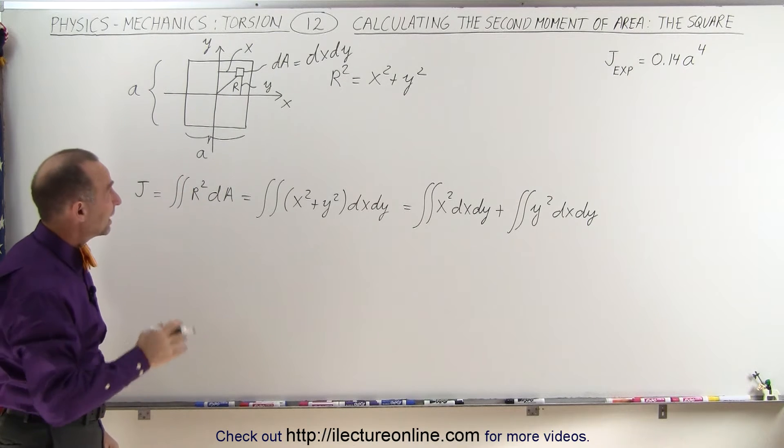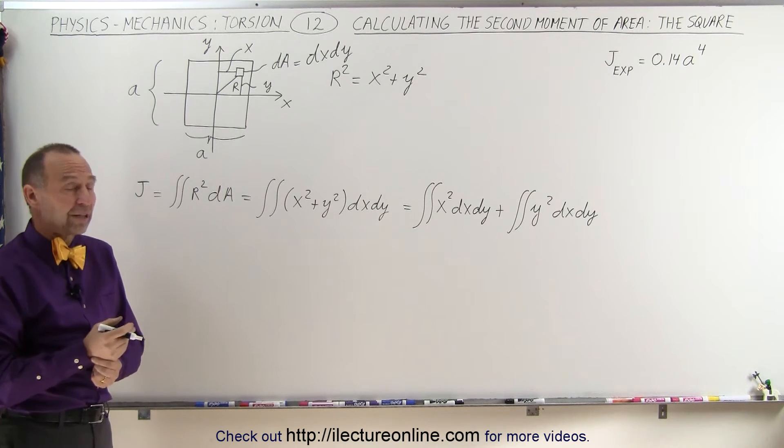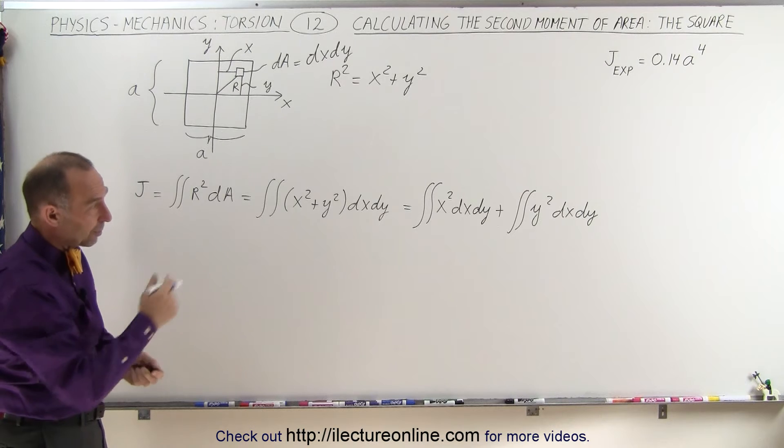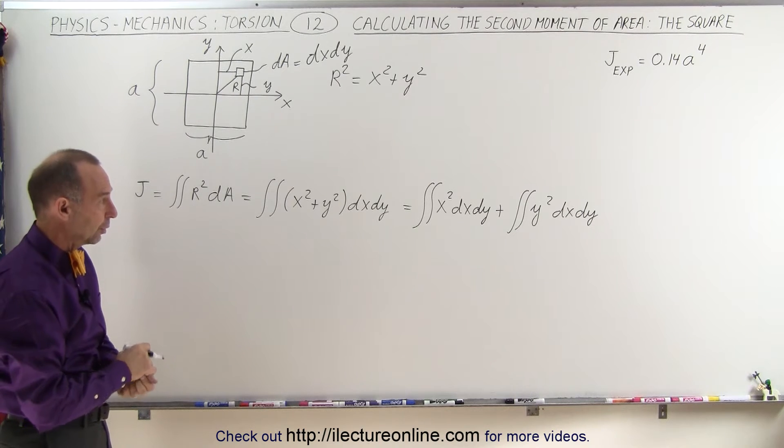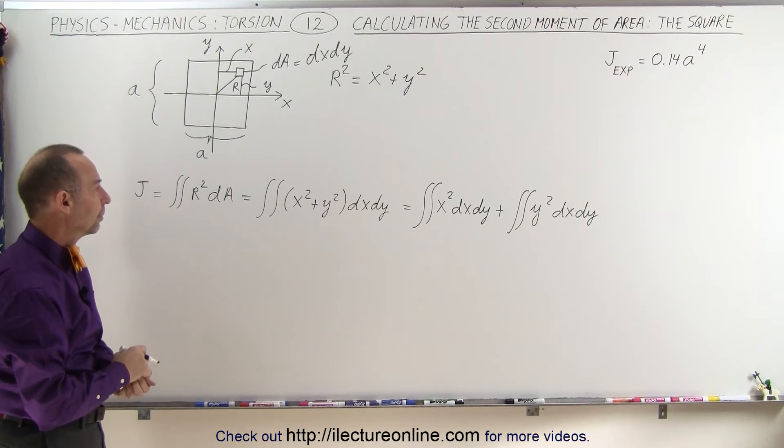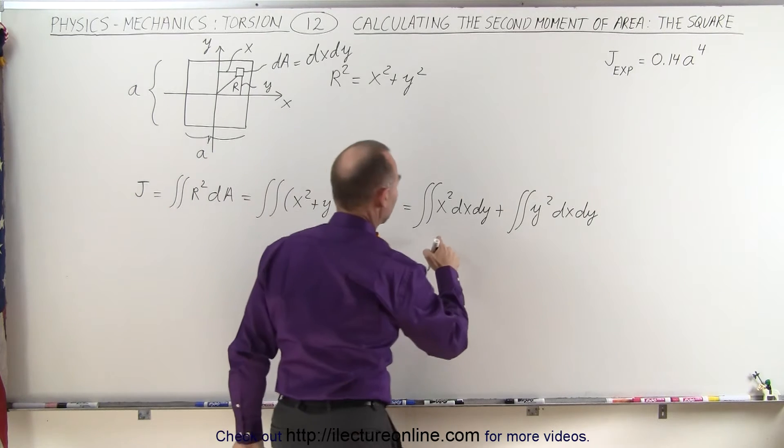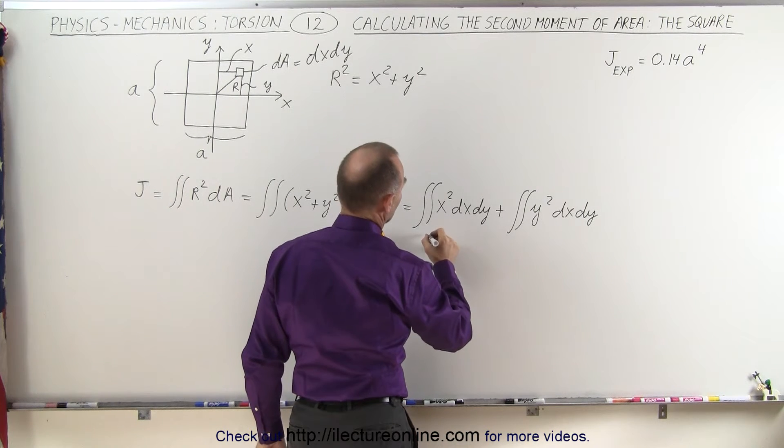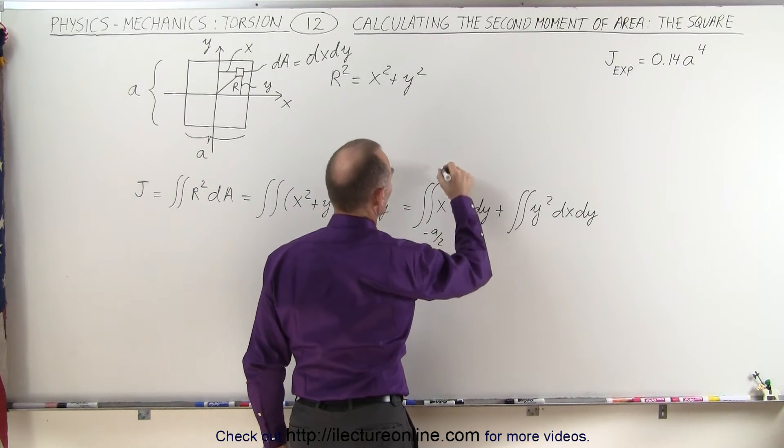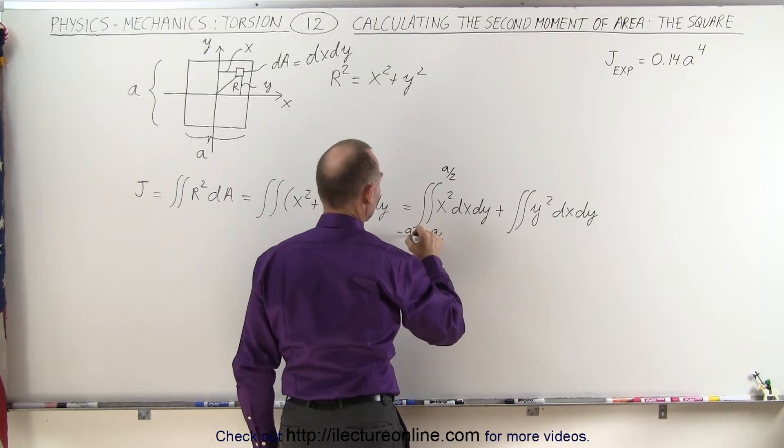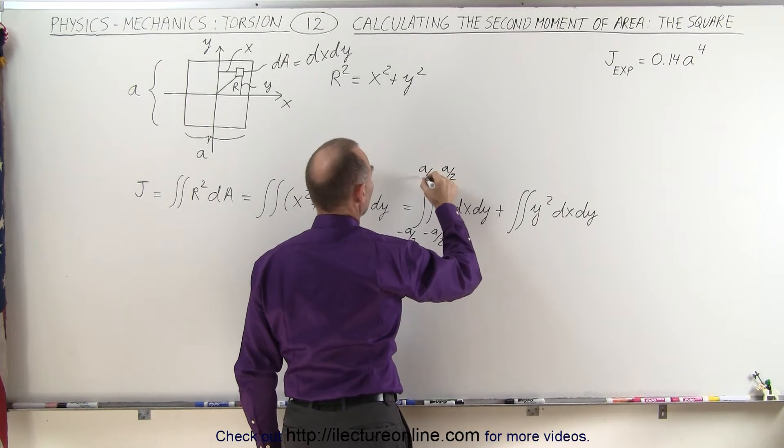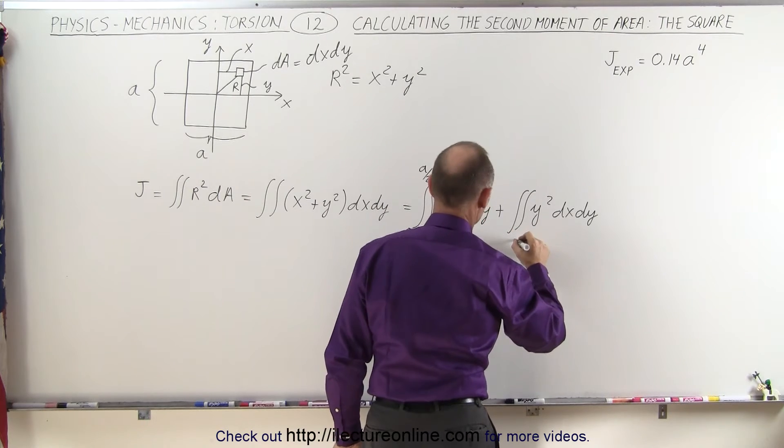Notice there's a lot of symmetry between the x and the y direction, so whatever we find for the x integral will be exactly the same as we find for the second integral, the one that has y squared in it. But let's go ahead and do this. So in the x direction, we go from negative A over 2 to positive A over 2, and for the y direction, we'll be from negative A over 2 to positive A over 2, for both integrals.